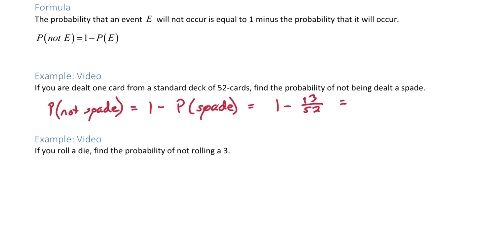That gives us 39 out of 52, or if we reduce, 3 fourths. If you roll a die, find the probability of not rolling a 3.